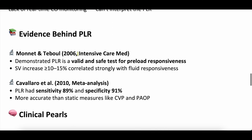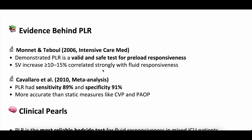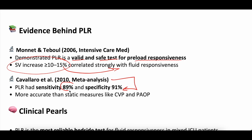Evidence behind the passive leg raise: this is actually one of the more well-validated volume assessment tools. In 2006, Monnet and Teboul looked at passive leg raise in patients and found it's valid and safe for preload responsiveness, and that a stroke volume increase of 10 to 15% correlated strongly with fluid responsiveness. Cavallaro in 2010 did a meta-analysis and found sensitivity of 89% and specificity of 91% — much better than static measures like CVP, wedge pressure, or IVC ultrasound. That said, fluid responsiveness itself and whether it benefits patients is still not totally clear.